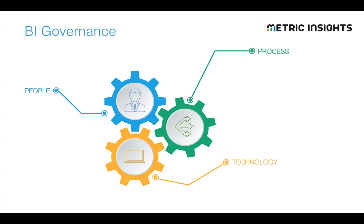Why is that? It's because there are three gears that have to turn together in unison in order to make it work. You've got to have the right people in the right roles with the right responsibilities. They have to be given a process that really works within your governance framework. And then you have to have technology that meshes with the people and the process to enable that process to be executed effectively. If any one of these gears does not turn or doesn't fit, then the whole thing is just not going to work and the governance initiative will fail.